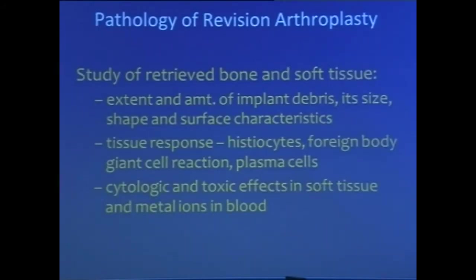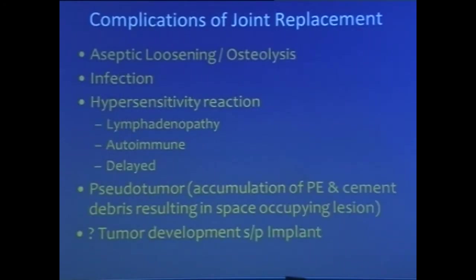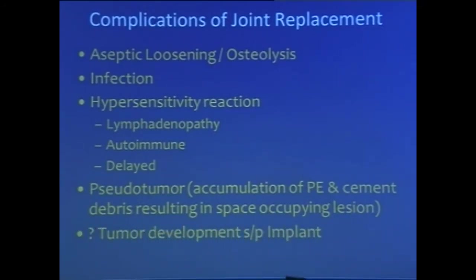The pathology of revision arthroplasty involves study of retrieved bone and soft tissue to demonstrate the extent and amount of implant debris — its size, shape, and surface characteristics — and the tissue response, whether histiocytic, foreign body giant cells, or plasma cells, and also to include cytologic and toxic effects in soft tissue and metal ions in blood. Complications of joint replacement include aseptic loosening or osteolysis, infection, hypersensitivity reactions such as lymphadenopathy, autoimmune or delayed response, development of a pseudotumor from accumulation of polyethylene and cement debris resulting in a space-occupying lesion, and — question mark — tumor development status post-implant.